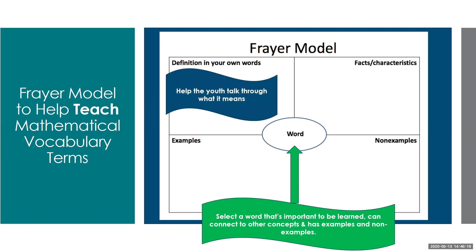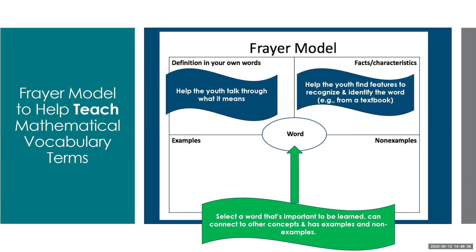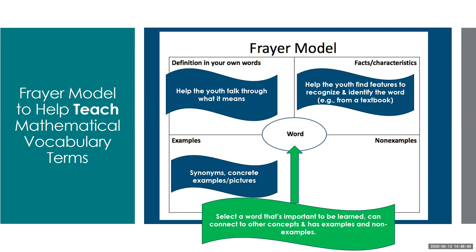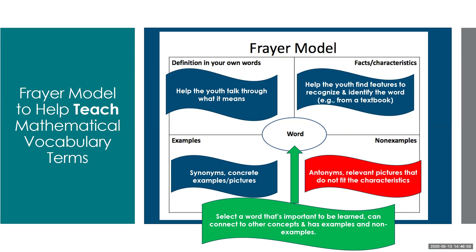We want to help the youth talk through what the definition is in their own words. Then we'd want to help the youth find some additional features — facts and characteristics — that would help them recognize and identify that word, and that's where textbooks or other resources come in handy. We'd want to have some examples: synonyms or other words or terms that mean the same thing, and this is a great place to draw concrete examples or pictures of that concept. Finally, we want some non-examples — relevant pictures that are similar but don't quite fit the characteristics, or things that are opposite, antonyms, or things that students might confuse.